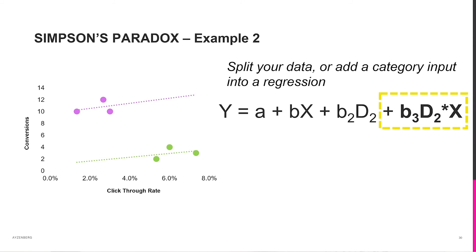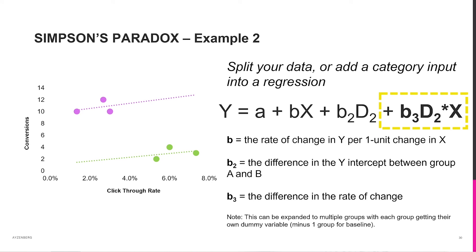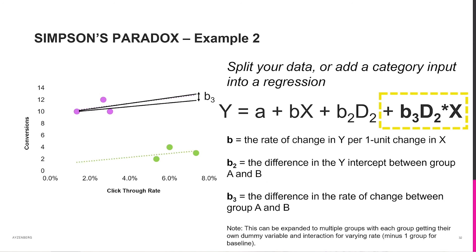We can extend this even further to yield different slopes — different rates of change between group A and group B — by adding one additional interaction term to our regression equation. Our initial beta should not be interpreted out of context; we have to consider D. When D is zero, beta is still the change in Y per one unit change in X. Beta 2 is still the difference in intercepts. But now we have beta 3, which is the difference in the rate of change between our two groups — the incremental increase or decrease from the original beta when D equals 1.